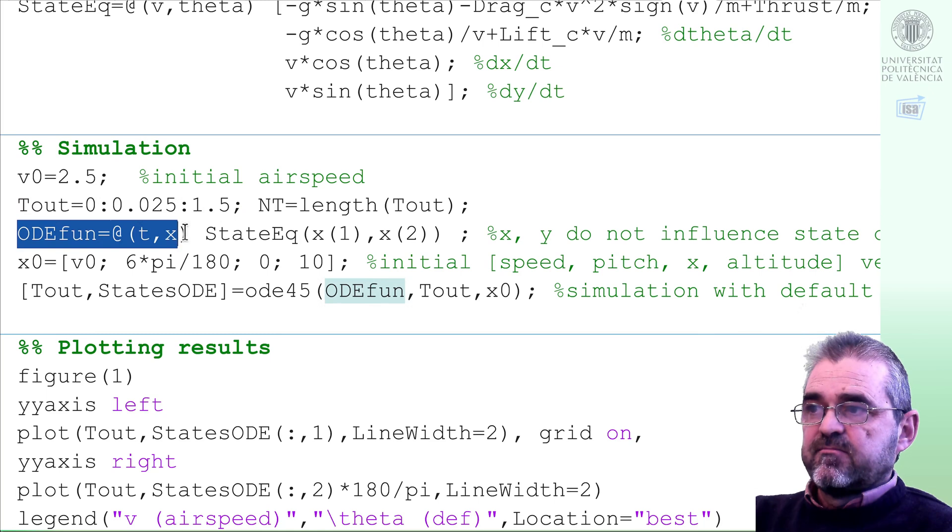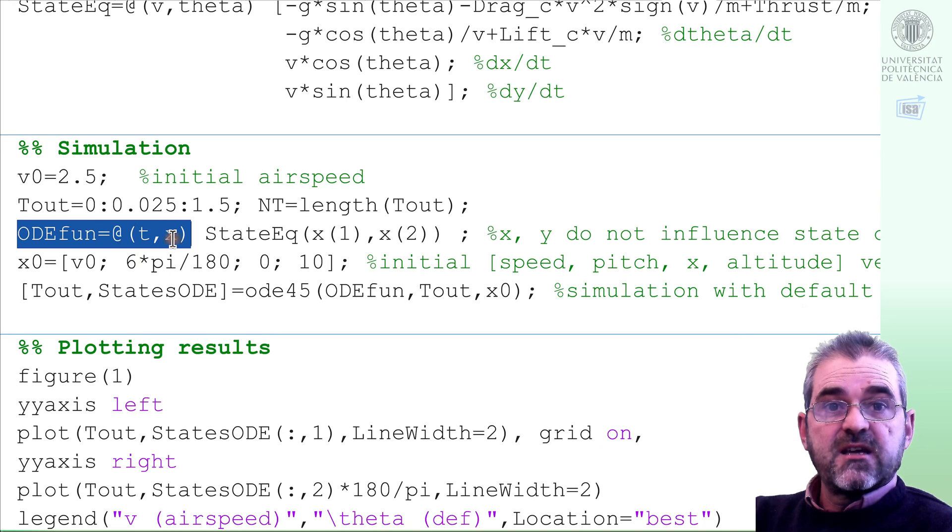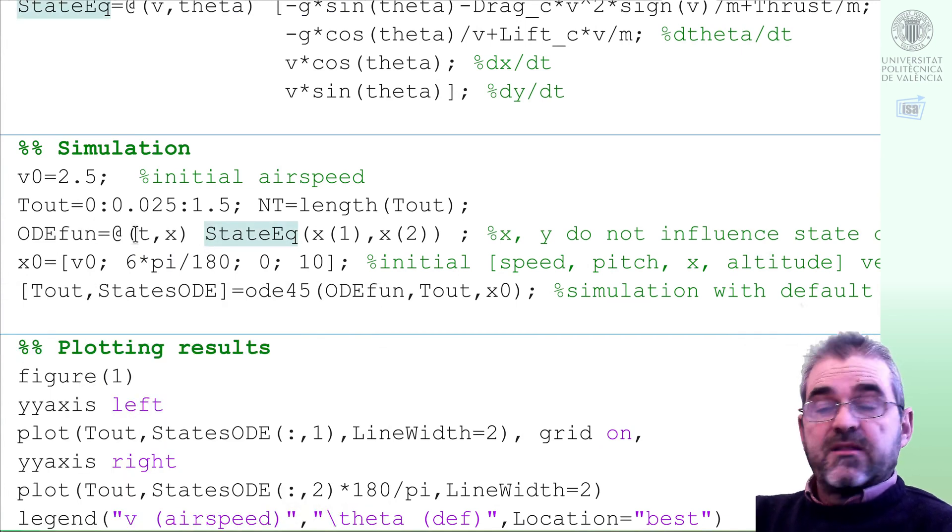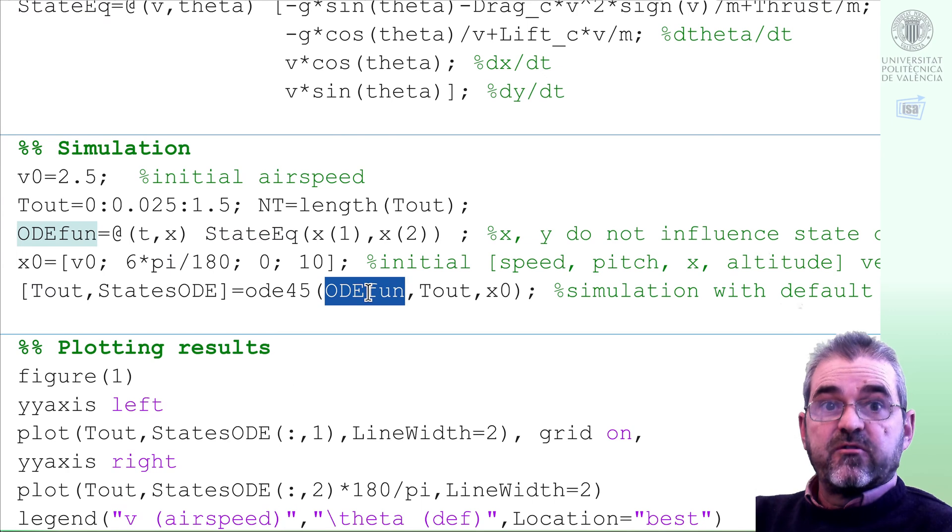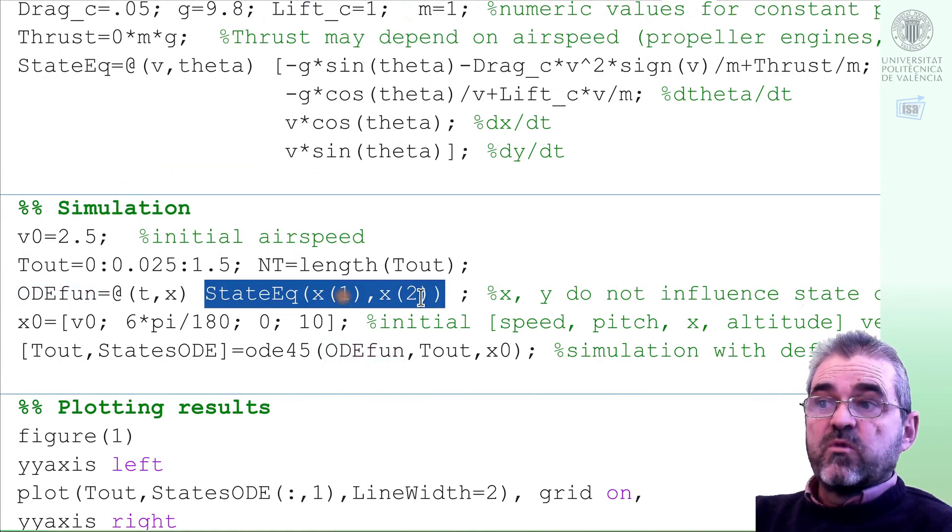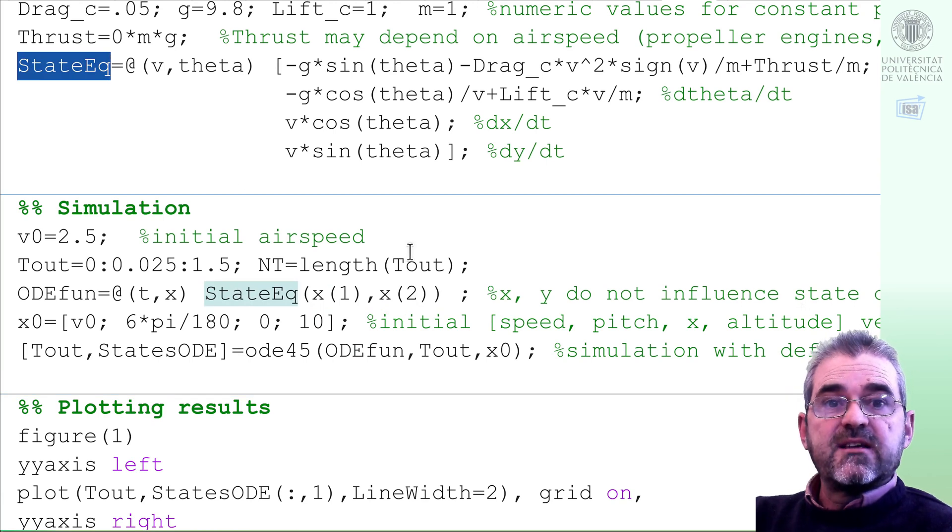And the most important argument is this ODEFUN, which is a function that must take as arguments the clock, lowercase t, and the state, a four-dimensional vector with the result of the integration of these four derivatives. Then the output of ODEFUN must be a four-dimensional vector with the state time derivatives. So I will just call the state equation with only the two first components of the state, x1 is airspeed, x2 is pitch, because those two numbers are the only ones I need in order to compute the four state derivatives.